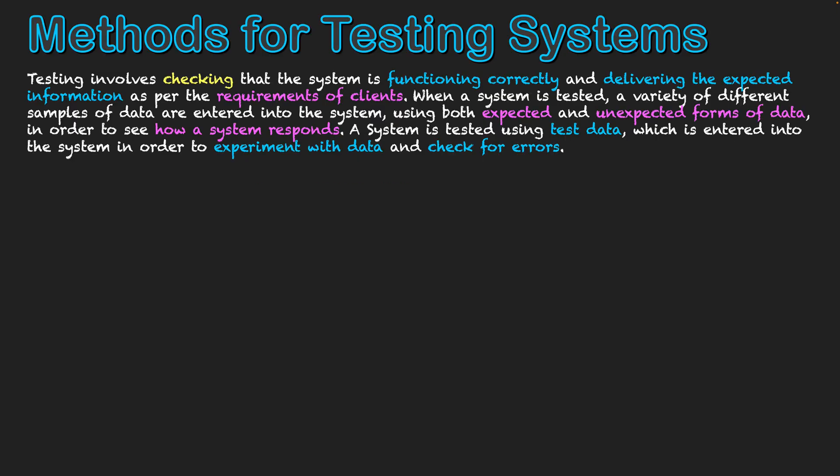Testing involves checking that a system is functioning correctly and delivering the expected information as per the requirements of clients. When a system is tested, a variety of different samples of data are entered using both expected and unexpected forms of data in order to see how a system responds. We want to put in the types of data the system is expected to take and see how it calculates that data. But we also want to put in some unexpected data, because when a system doesn't get the data type it's expecting, it can lead to crashes and other elements that can affect integrity.